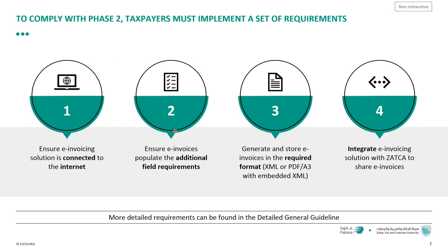To comply with phase two — the integration phase — there are four general requirements. The invoicing solution at the taxpayer's side must be able to connect to the internet to integrate with ZATCA's platform. There are additional fields required in phase two that must be populated in the invoice. The invoice must be generated and stored in XML format or PDF/A-3 with the same XML embedded within it. Finally, they need to integrate their invoicing solution with ZATCA to share the electronic invoices. More details can be found at zatca.gov.sa under the invoicing tab.